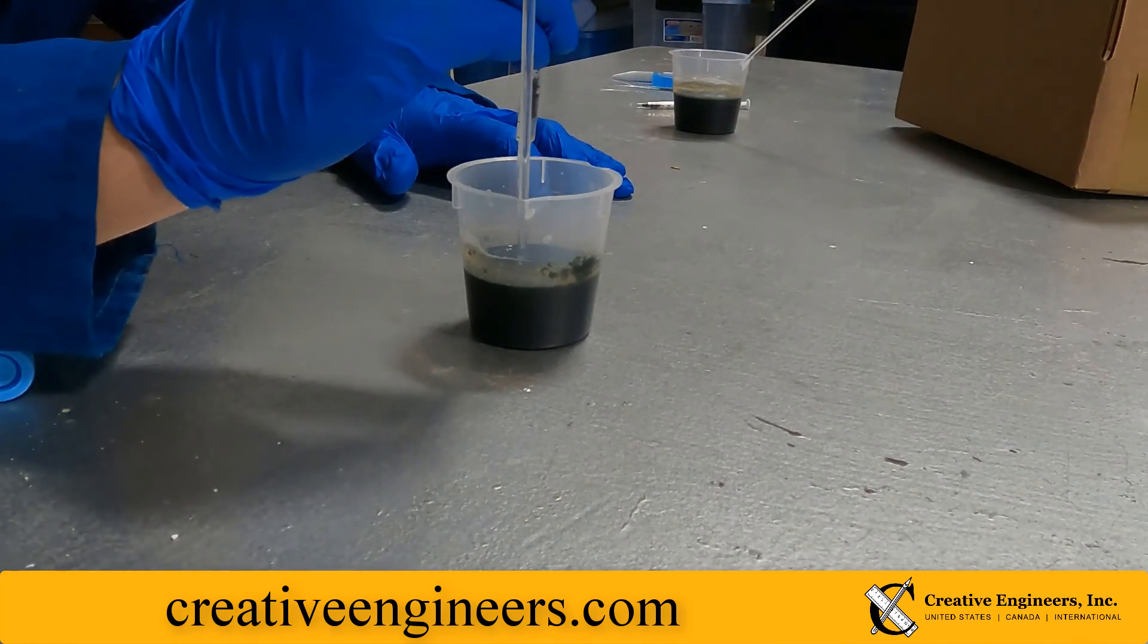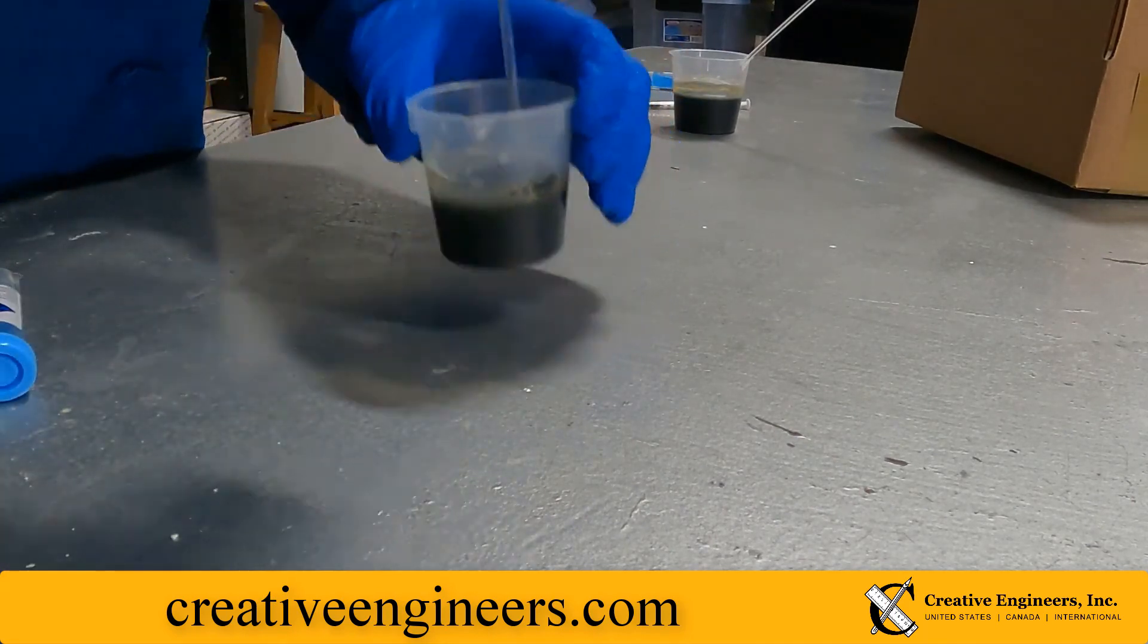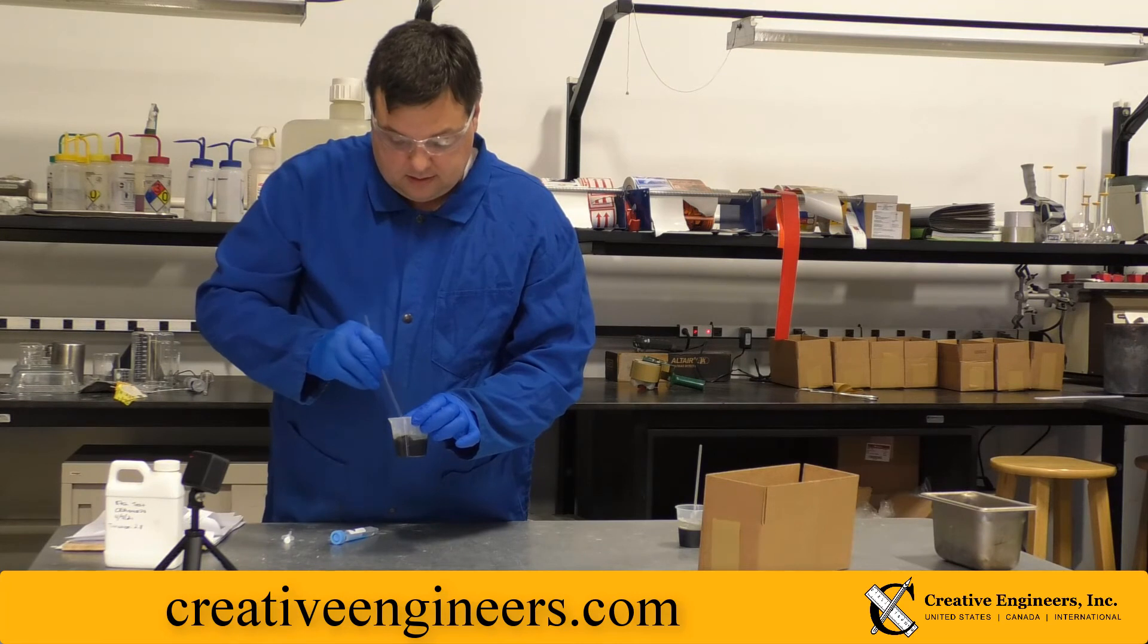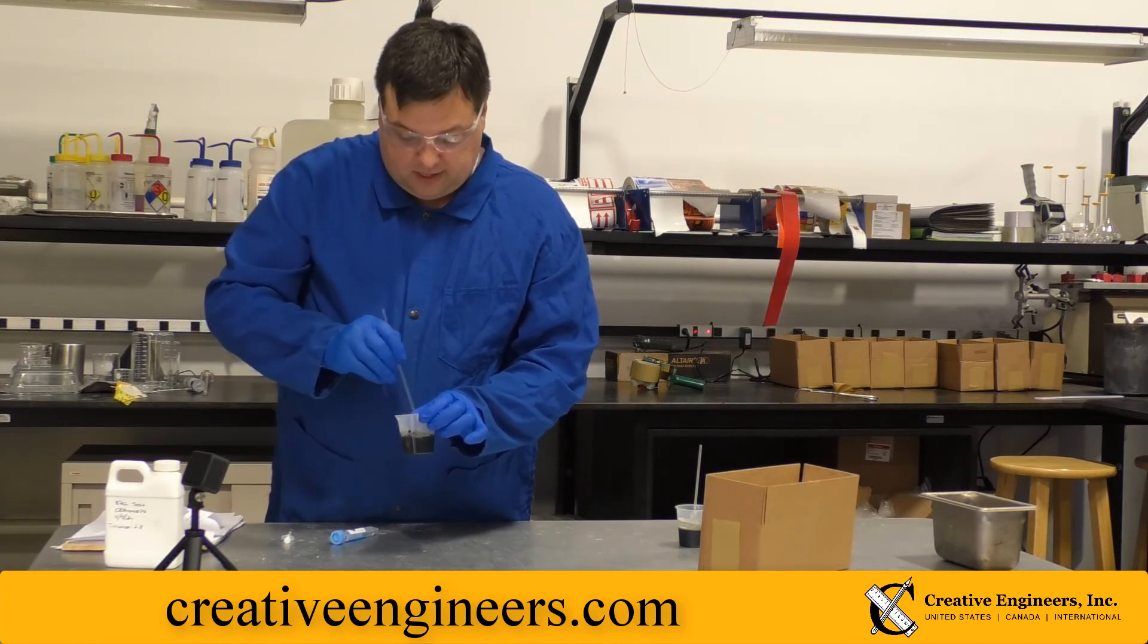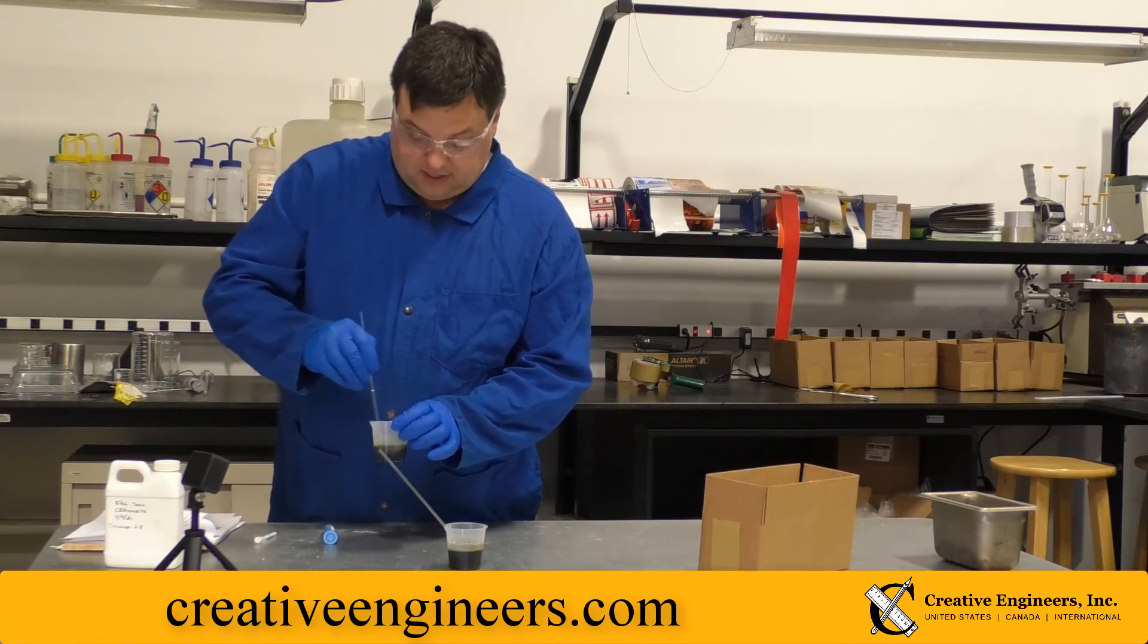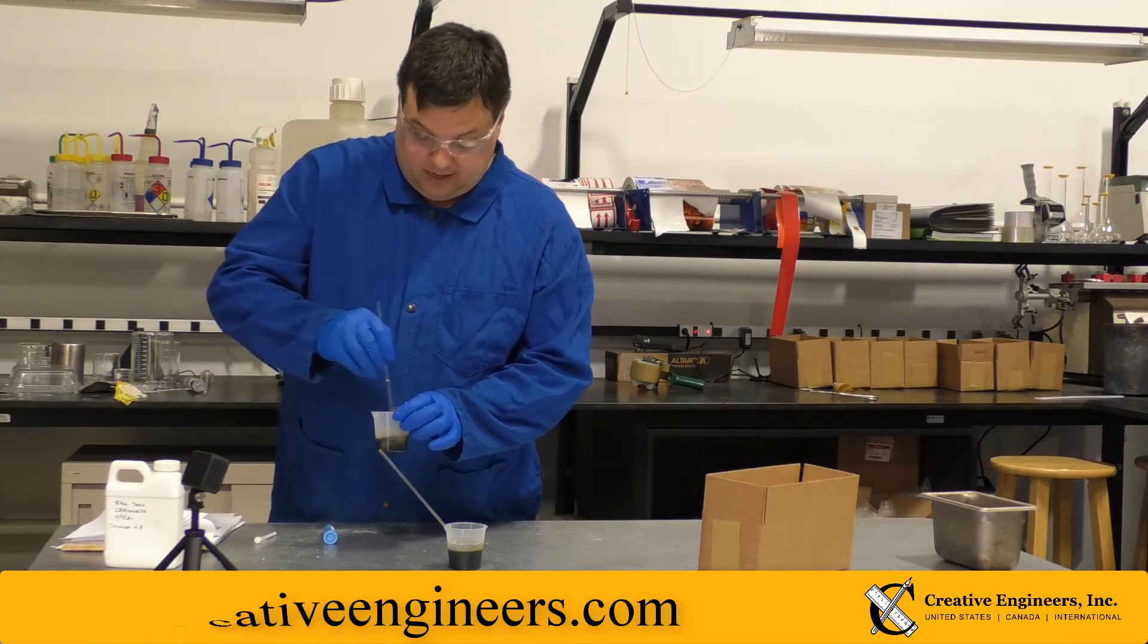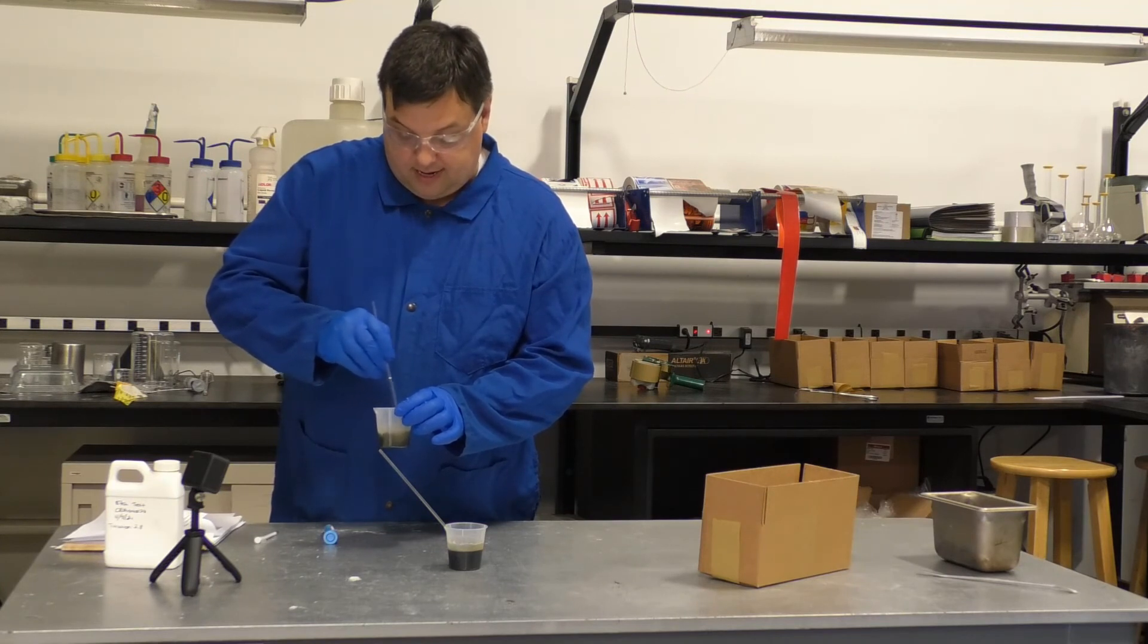So, we'll keep adding half a milliliter sections until we get up to the two and a half milliliter total called for in the instructions page. So, here, you can see with stirring, the black is going away, and it's definitely turning into a gray.